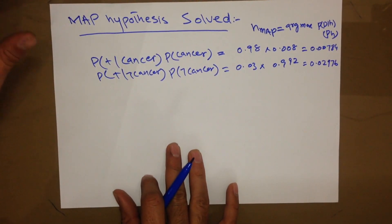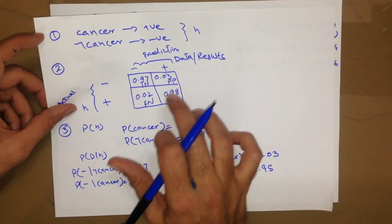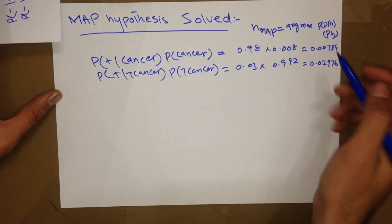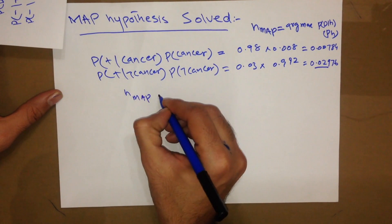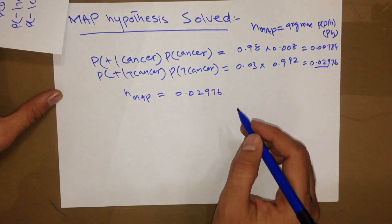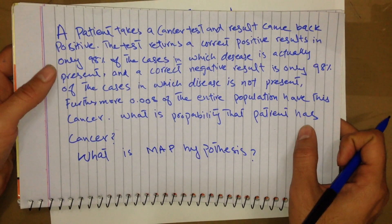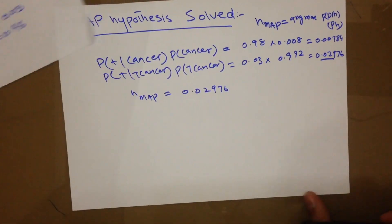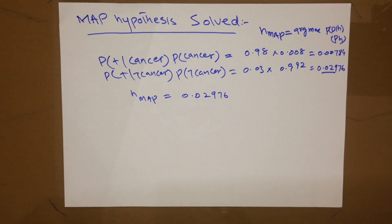We have calculated two hypothesis values for positive data to get the MAP hypothesis. The final MAP hypothesis will be the one with the greater value, which is 0.02976 — corresponding to not cancer. So H_MAP equals 0.02976, and the MAP hypothesis is not cancer. That's all about finding a MAP hypothesis for this question. Hope you enjoyed this video — please like and subscribe and see you in the next video.